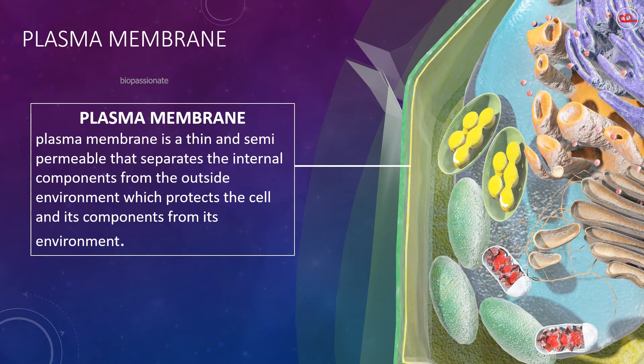A plasma membrane is present just below the cell wall, which is a thin and semi-permeable membrane that separates the internal components from the outside environment and also protects the cell and its components from the environment.